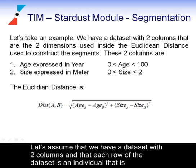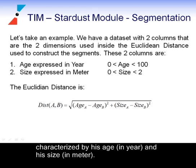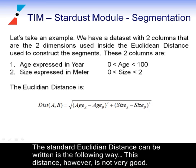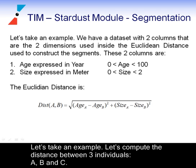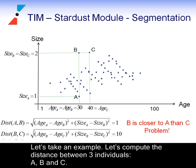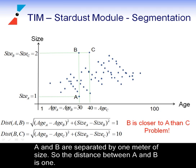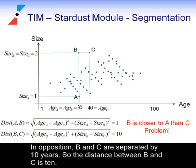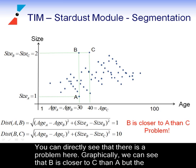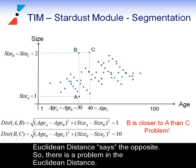Now let's take a more real example. Let's assume that we have a dataset with two columns and that each row is an individual characterised by his age in years and his size in metres. The standard Euclidean distance can be written in the following way. This distance, however, is not very good. Let's compute the distance between three individuals A, B and C. A and B are separated by one metre of size, so the distance between A and B is one. B and C are separated by ten years, so the distance between B and C is ten. Graphically, we can see that B is closer to C than A, but the Euclidean distance says the opposite. So there is a problem with the Euclidean distance.